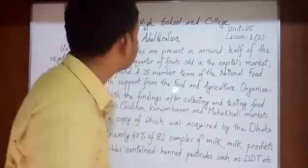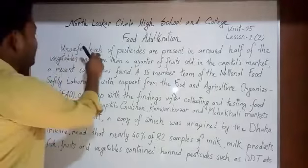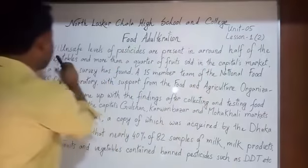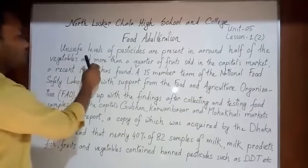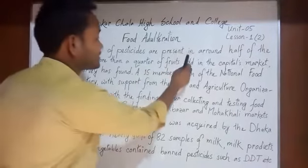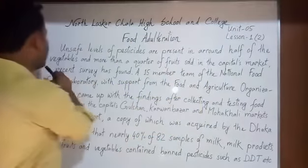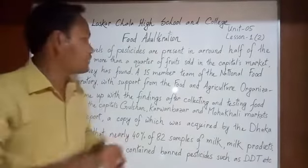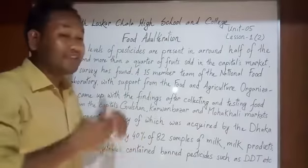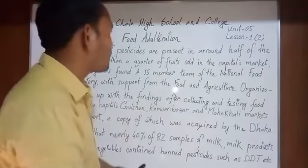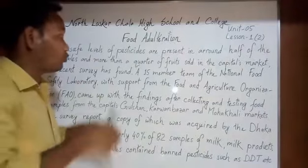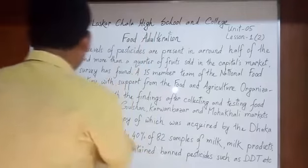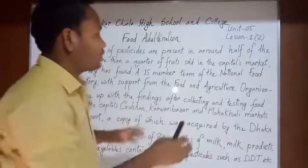This passage states that unsafe levels of pesticides are present in around half of the vegetables and more than a quarter of fruits sold in the capital's markets. A recent survey has found that pesticides are mixed or present in half of the vegetables and most of the fruits sold in the capital's markets.